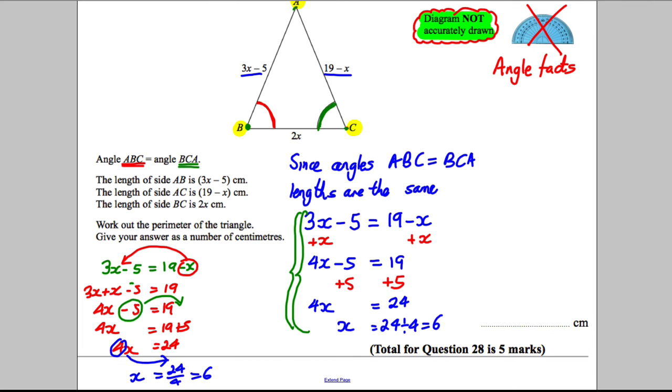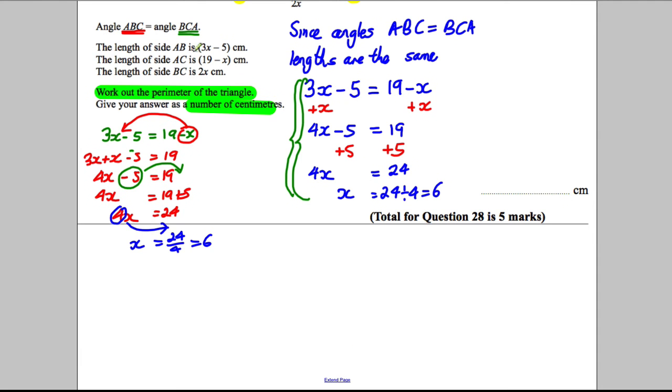But that wasn't what the question asked. So go back to our question and read it carefully. Work out the perimeter of the triangle. Give your answer as a number of centimeters. So what we're going to have to do is state each of the sides. So I'm going to keep going here, extend the page.